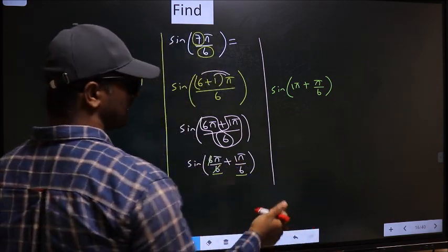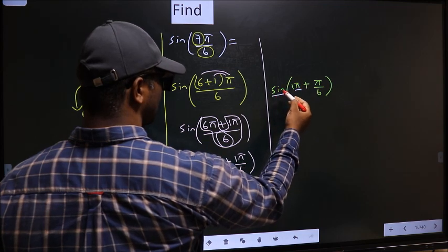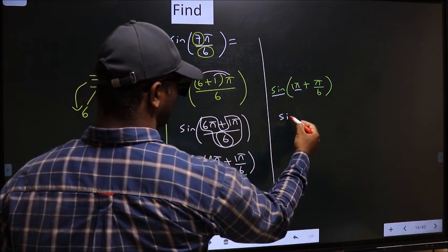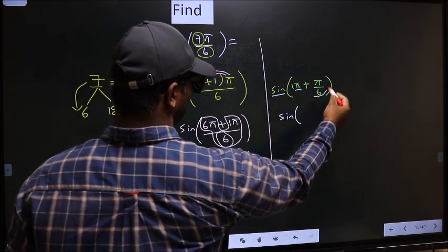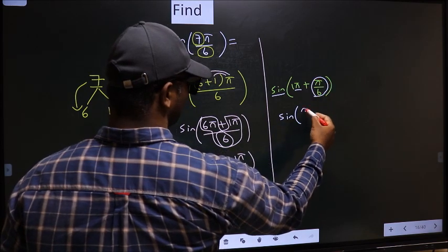Next, here we have π. So sine is not going to change. It will remain sine of. We get this angle π/6.